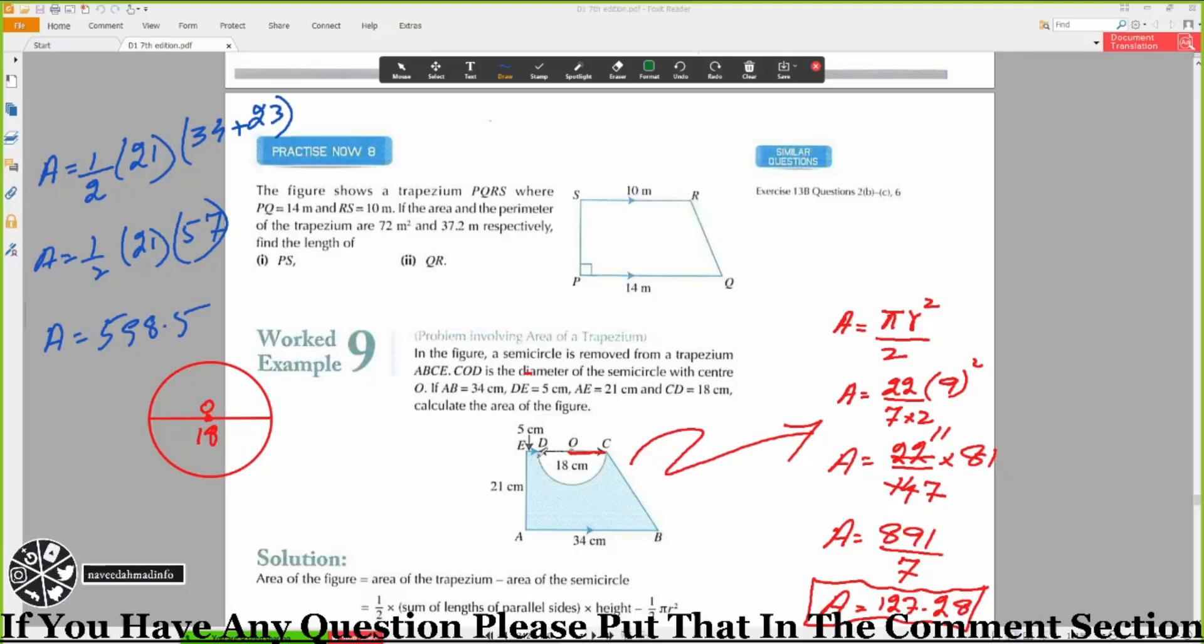This area is 598.5, which is the area of the trapezium. The circle area is 127.28. So what do we need to do? We need to find the area of the shaded region. Do we add or subtract? Subtract.